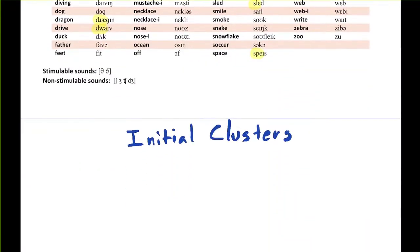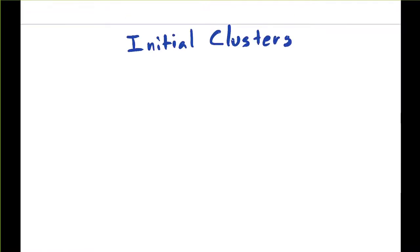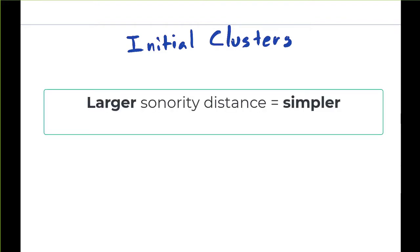I'm going to create a place to copy my consonant clusters that occur in the inventory. A useful way to organize initial clusters is based on their sonority distance because their relative sonority determines how complex they are. A larger sonority distance between two consonant clusters means it's a more common type of cluster, a simpler type of cluster.